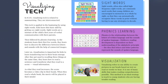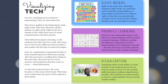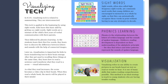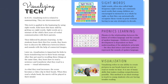Visualizing tech: in ICANN, visualizing tech is related to summarizing — they are interconnected. This tech is applied in the beginning by using sight words. Kids learn the basic skill by getting 100 sight words, which are a mixture of the child's first years of verbal communication with their parents.